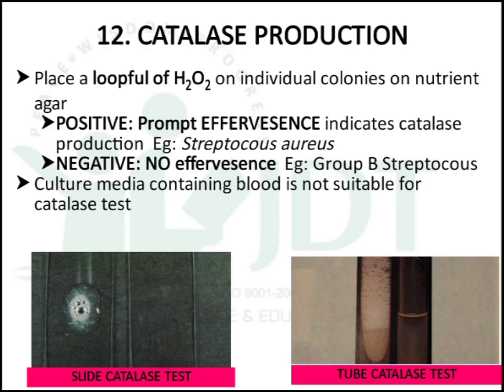The next test is the catalase production test. A loopful of hydrogen peroxide is placed on an individual colony on a nutrient agar. A positive test gives effervescence, indicating the microorganism is capable of producing catalase — example: Staphylococcus aureus. A negative test produces no effervescence — example: group B Streptococcus. Note that this test is not suitable for blood.